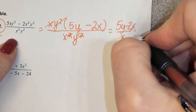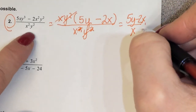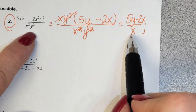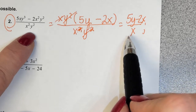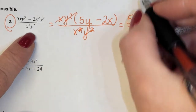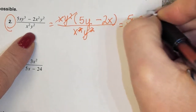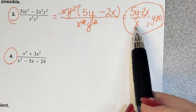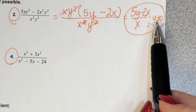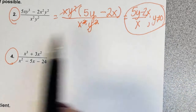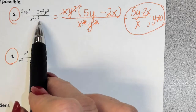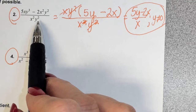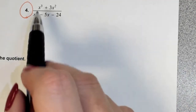What restriction do we have to state? Look back at the beginning. I don't have to say x can't be zero because I can see that from the simplified form. But I can't see from the simplified form that y can't be zero. Back in the original, if I plugged in zero for y, I'd have zero over zero, which doesn't mean anything. So I need to state that y cannot equal zero.